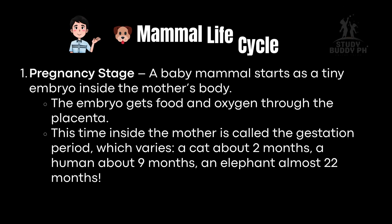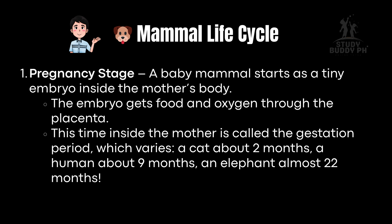Mammal Life Cycle — Stage 1, Pregnancy: A baby mammal starts as a tiny embryo inside the mother's body. The embryo gets food and oxygen through the placenta. This time inside the mother is called the gestation period, which varies: a cat about two months, a human about nine months, an elephant almost 22 months.